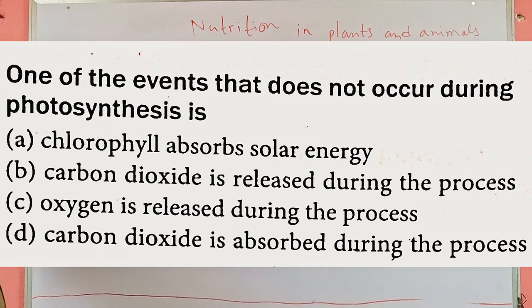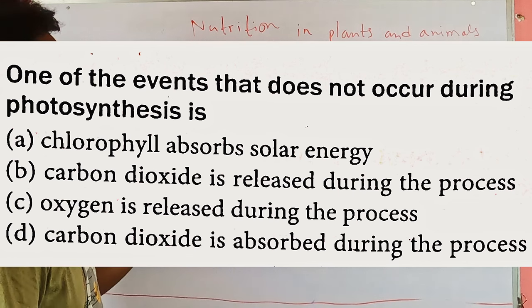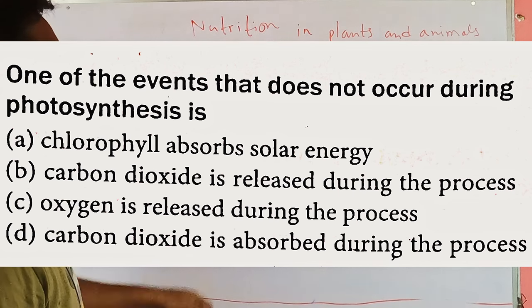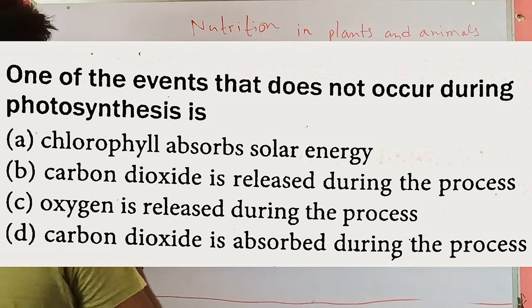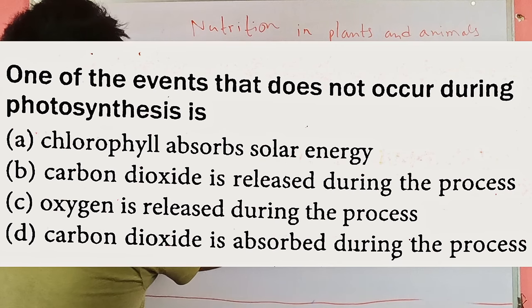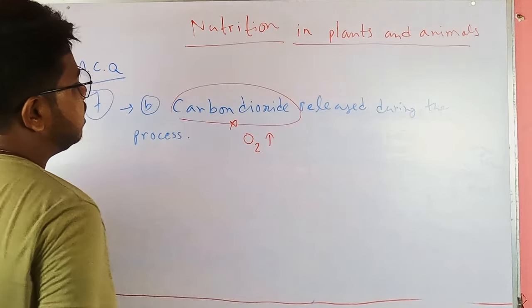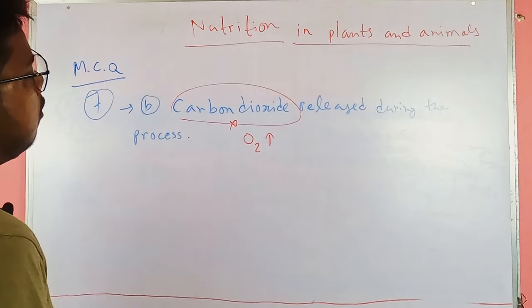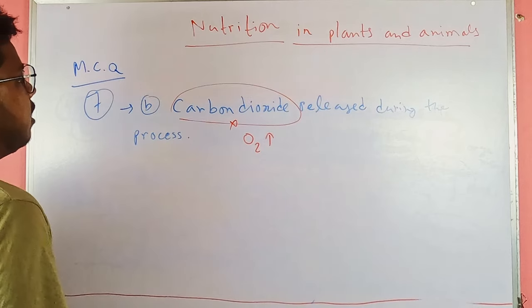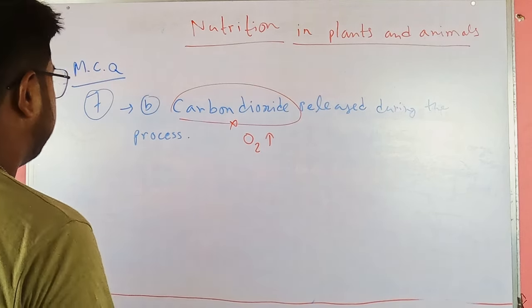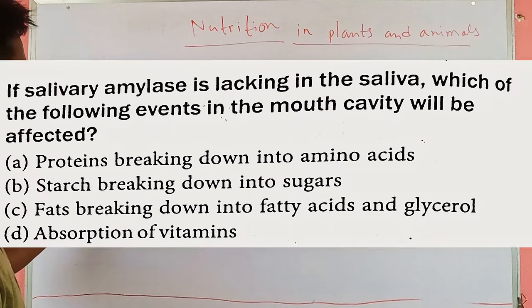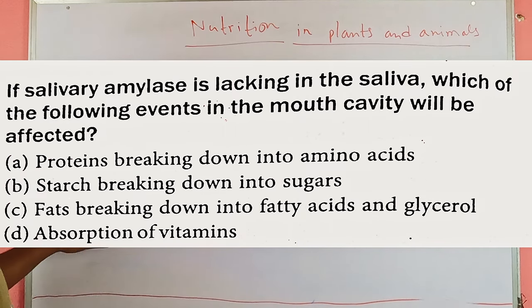The next question asks which process does not occur during photosynthesis. The correct option is B — it states that carbon dioxide is released during the process. We know that not CO2 but oxygen is always released as a byproduct of photosynthesis, along with production of glucose and water.